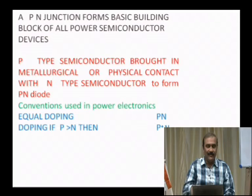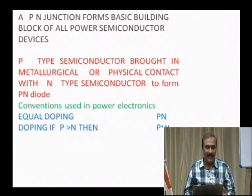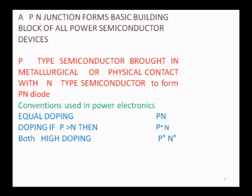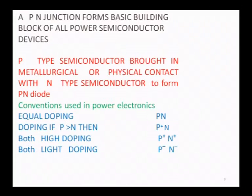These doping levels are important. Whenever you study the structural features of power semiconductor devices, you must keep track of these conventions. This representation is important to understand the actual behavior of your semiconductor device. Doping is the process of adding impurity to a pure semiconductor. Understanding doping notation helps you read the literature in any of the textbooks correctly.